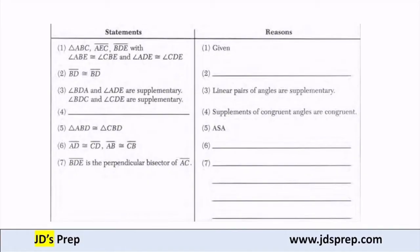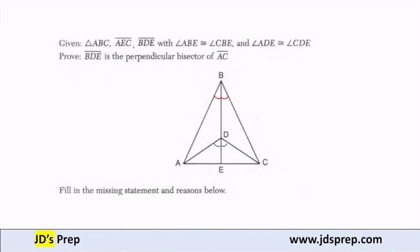The second thing is that BD is congruent to BD. That we know is just the reflexive property — it's the same line.